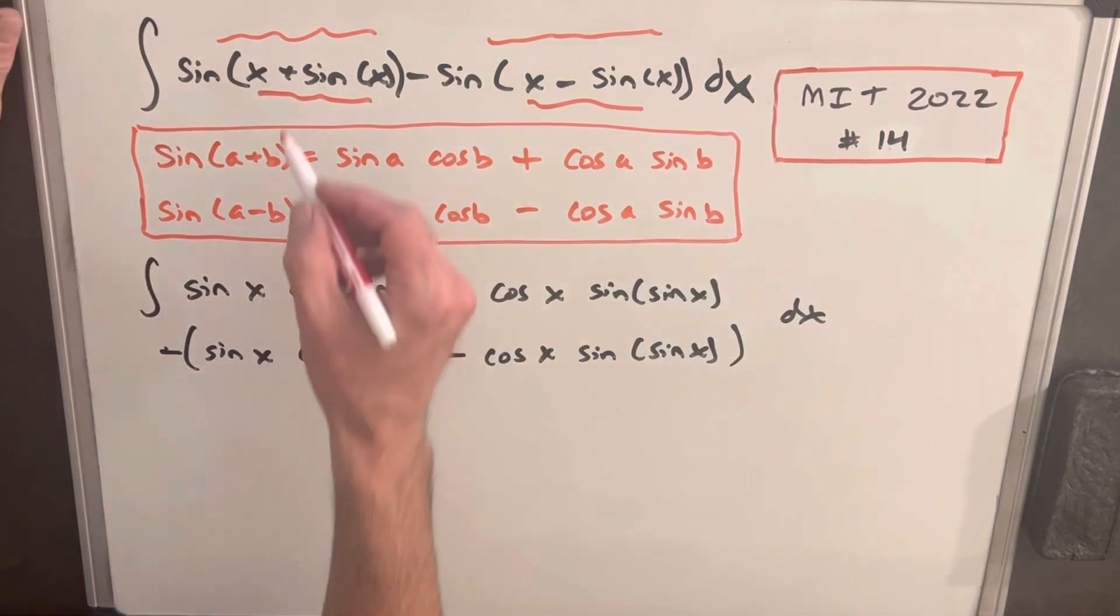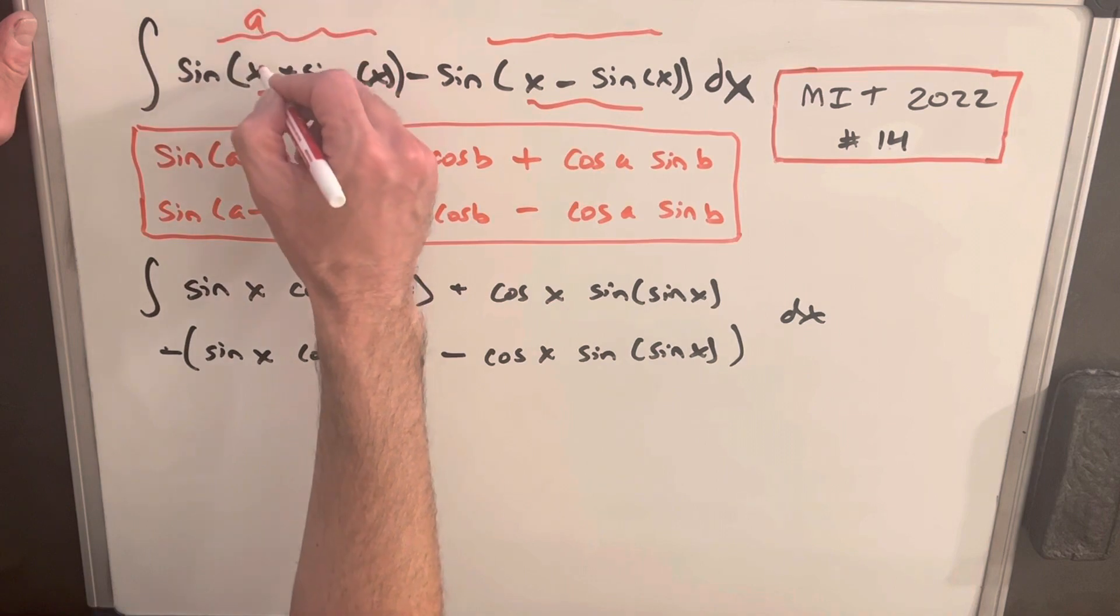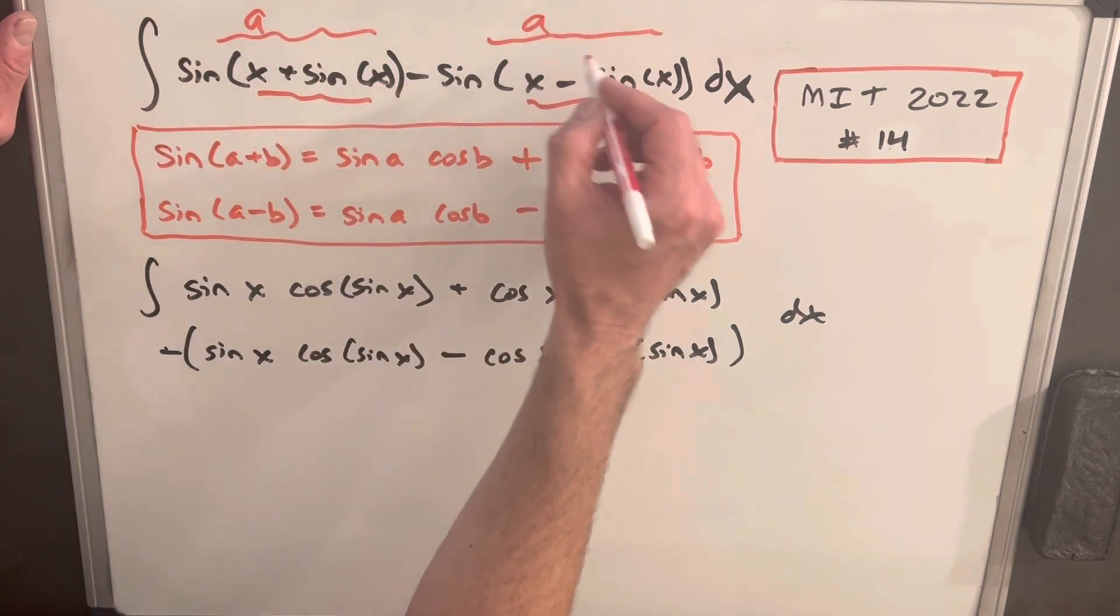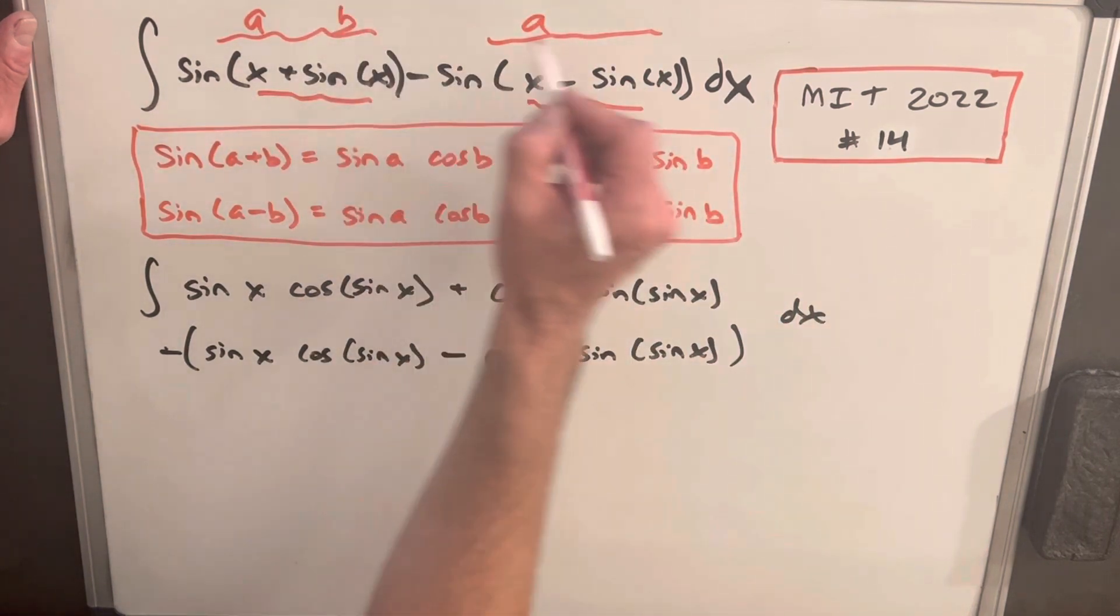Okay, so rewriting our integral, you'll notice that what I did was I set our a value, which is just an x, the same thing here so our a is x, and our b value is sine of x.